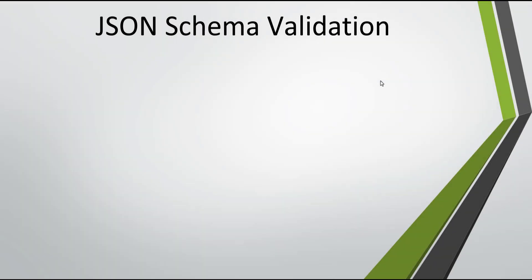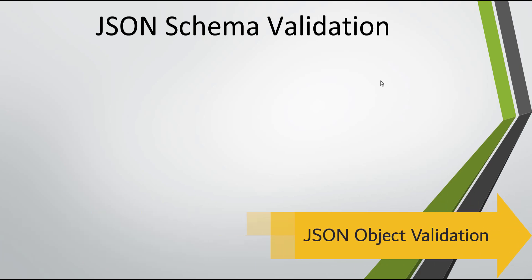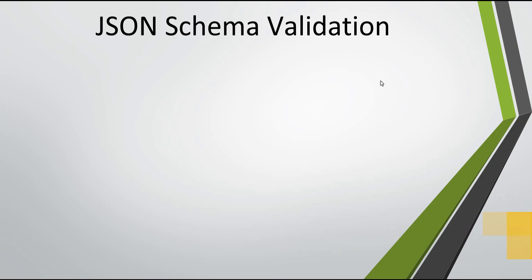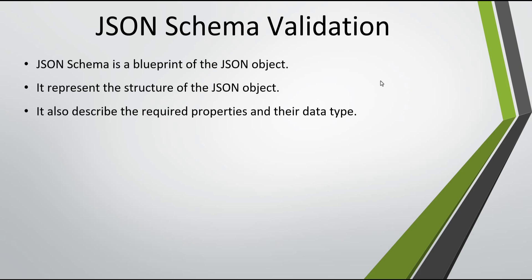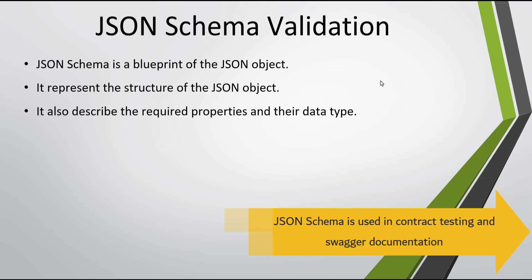Hello everyone, welcome to another video. In this video I am going to discuss how to validate the JSON object using the JSON schema. First, let us understand what a JSON schema is. JSON schema is the blueprint of the JSON object — it represents the structure of the JSON object, and it also describes the required properties and their data types.